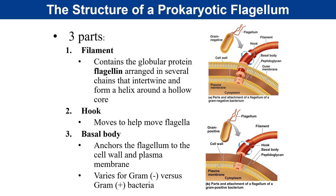The basal body varies based on cell wall structure. Gram-negative cells have several rings in their basal body — some rings anchor the flagellum into the cell membrane, another ring is in the thin layer of peptidoglycan, and a fourth ring is in the outer membrane. Gram-positive bacteria have only a pair of rings down in the plasma membrane, with none apparently found in the thick layer of peptidoglycan. This shows a difference in the two basal body structures of gram-negative and gram-positive flagella.